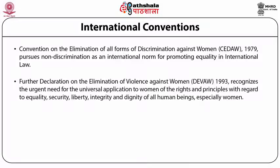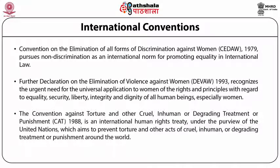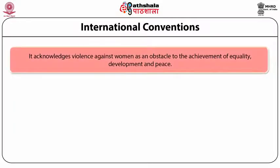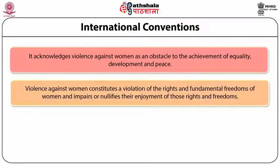The Declaration on Elimination of Violence Against Women, that is DEVAW 1993, recognizes the urgent need for the universal application to women of the rights and principles with regard to equality, security, liberty, integrity and dignity of all human beings, especially women. The Convention Against Torture and Other Cruel, Inhuman or Degrading Treatment or Punishment is an international human rights treaty under the purview of the United Nations which aims to prevent torture and other acts of cruel, inhuman or degrading treatment or punishment around the world. It acknowledges violence against women as an obstacle to the achievement of equality, development and peace. Violence against women constitutes a violation of rights and fundamental freedoms of women and impairs or nullifies their enjoyment of those rights and freedoms.